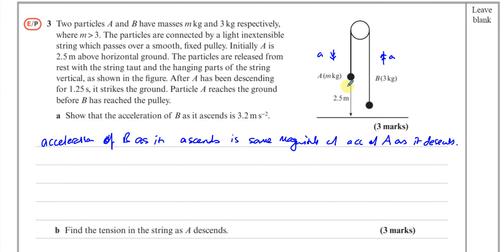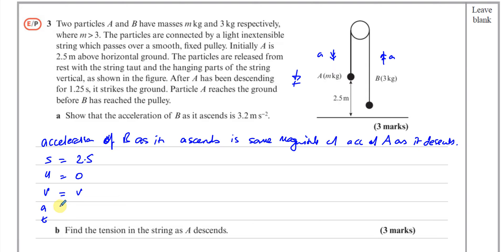Looking at particle A, it has constant acceleration. We know its displacement is 2.5 metres, the time taken was 1.25 seconds, and its initial velocity was zero because it was released from rest. So we can use the SUVAT equations to find the acceleration. Taking down as positive: S = 2.5, U = 0, V unknown, A to find, T = 1.25 seconds.